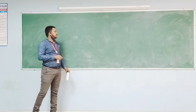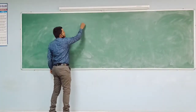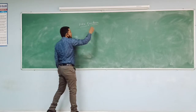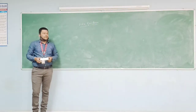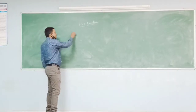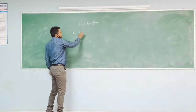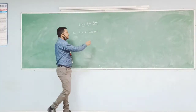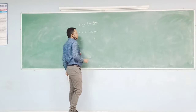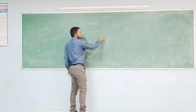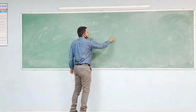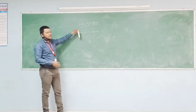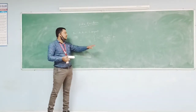So today we discuss the topic of beta functions. The definite integral from 0 to 1 of x power m minus 1 into 1 minus x whole power n minus 1 dx is known as a special type of function, which is known as the beta function.